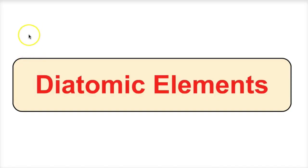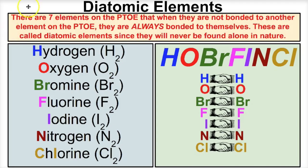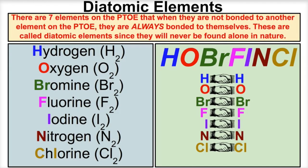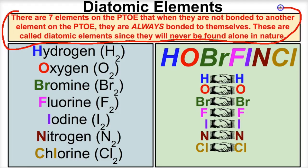Hey you guys, this is Mr. Millings and today we're going to learn about the seven diatomic elements from the periodic table. There are seven elements on the periodic table that are never found alone in nature. These are the seven diatomic elements that, when they are not bonded to another atom on the periodic table, will always be bonded to each other.